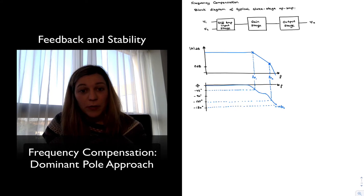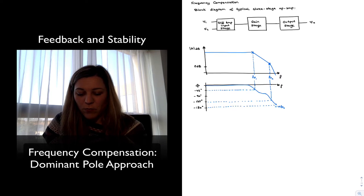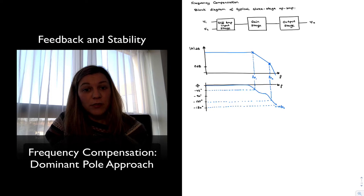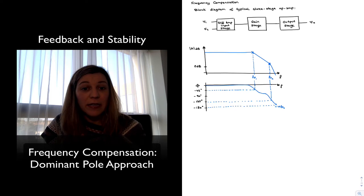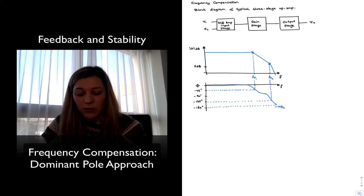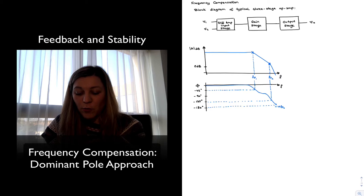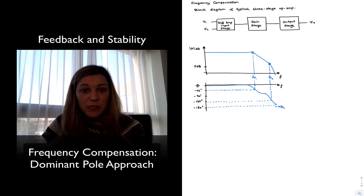In order to explain that, I have drawn the block diagram of a typical three-stage op-amp. For a typical op-amp, there is typically a differential input stage formed by a differential amplifier, followed by a gain stage, and finally an output stage. It can be shown that the frequency response of the op-amp is going to be mostly determined by the two poles that arise at the interfaces between stages.